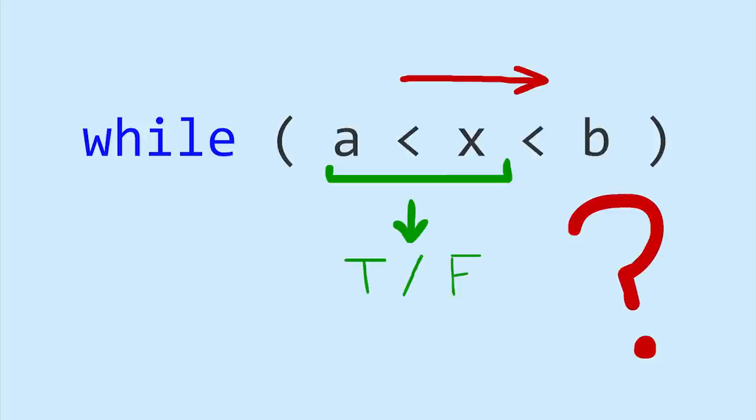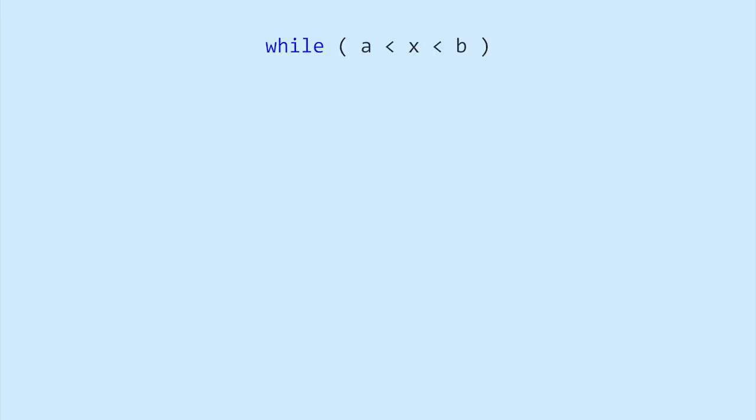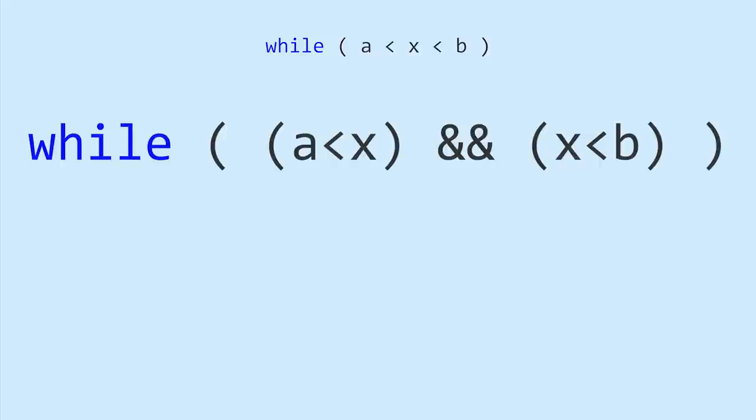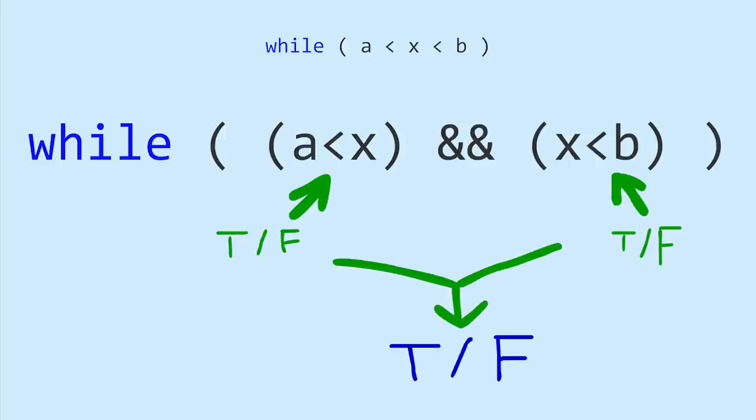Instead, the statement should be written something like this. This way, each half will evaluate to true or false, and then the final statement will be true or false. But that's ugly.